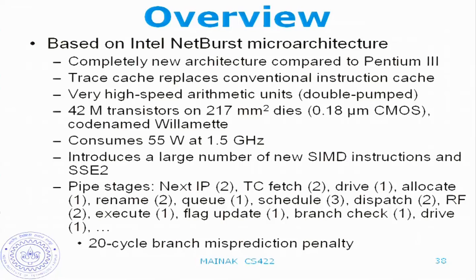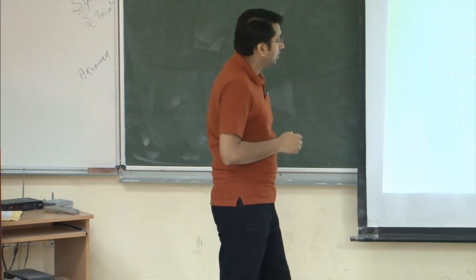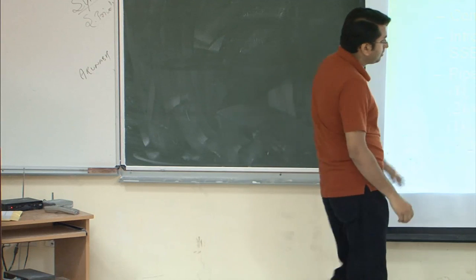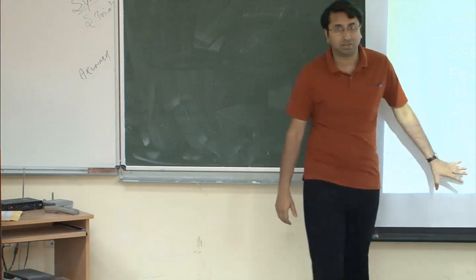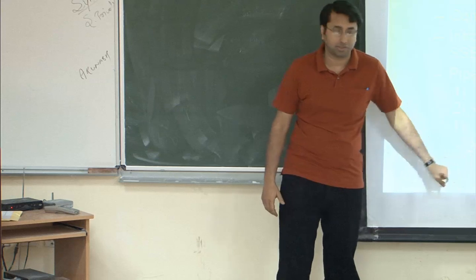If you count from the beginning of the pipe to when you find out whether the branch prediction was correct or not, it takes 20 cycles. This means a 20-cycle branch misprediction penalty. Since this processor issues three instructions per cycle, 20 cycles lost equals 60 lost instructions wasted in the pipeline — a huge resource loss. The implication is that you need very smart branch predictors to handle this long branch misprediction penalty.